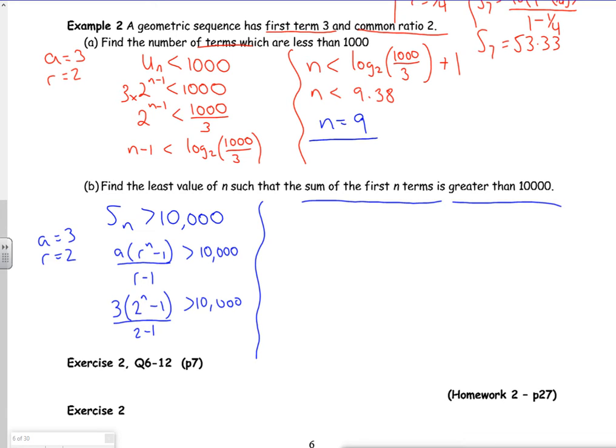Right. So the bottom there is just going to be a 1. If I divide through by 3, I've got 2 to the n minus 1 is greater than 10,000 over 3. So 2 to the n is greater than 10,000 over 3, add 1. Do logs again. Do log to base 2. So n is greater than log to base 2 of 10,000 over 3. This time your plus 1 is in your bracket with it.